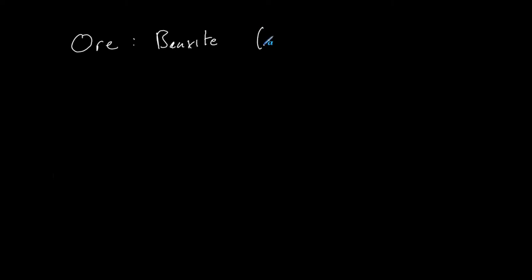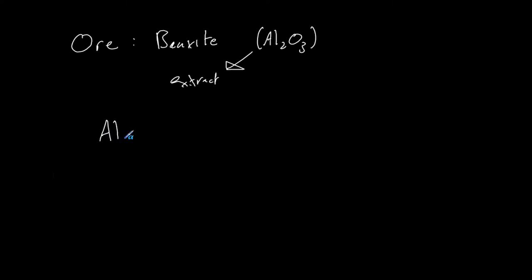Now we'll move on to the extraction of aluminium. We find aluminium in an ore known as bauxite, which contains aluminium oxide, Al₂O₃. Bauxite also contains various other compounds such as iron oxide, so we need to separate the aluminium oxide from the rest. We then need to split up Al₂O₃ by electrolysis.